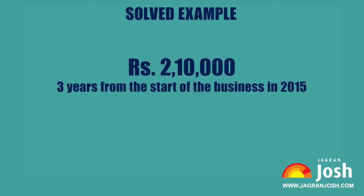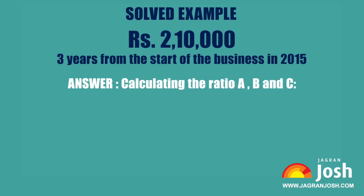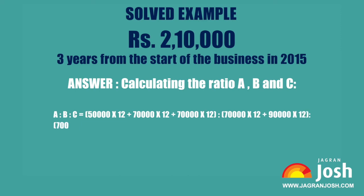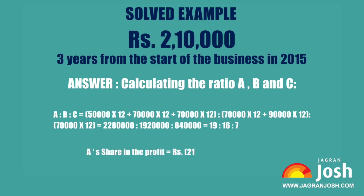Answer — calculating the ratio of A, B, and C: A's investment equals 50,000×12 plus 70,000×12 plus 70,000×12, giving A a total of 22,80,000. B's investment totals 19,20,000 and C's totals 8,40,000. This gives the ratio A to B to C equal to 19 to 16 to 7, with a combined total of 42. A's share in the profit equals rupees 2,10,000 × (19/42) = rupees 95,000.